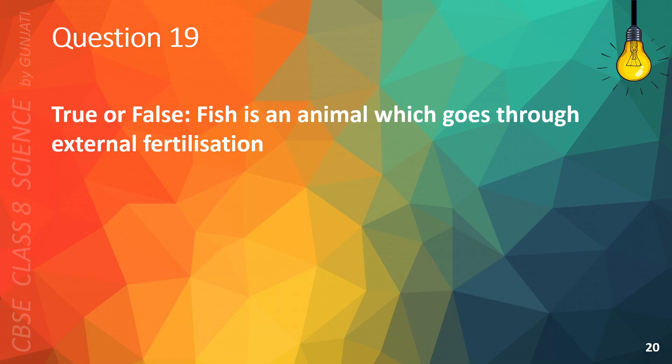Question 19. True or false: Fish is an animal which goes through external fertilization. The correct answer is A. True.